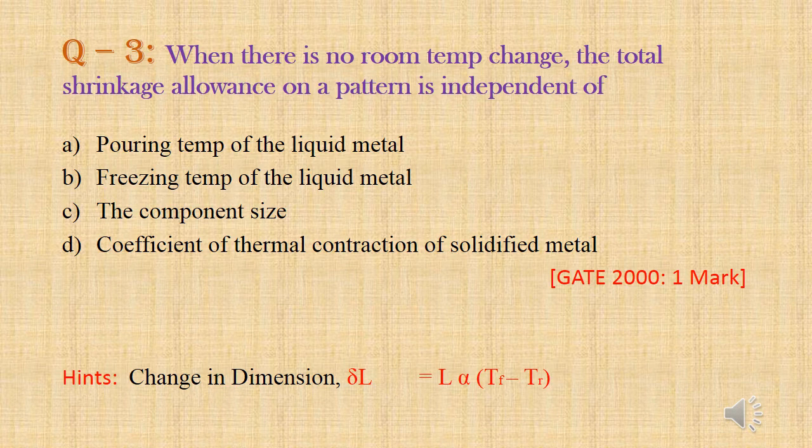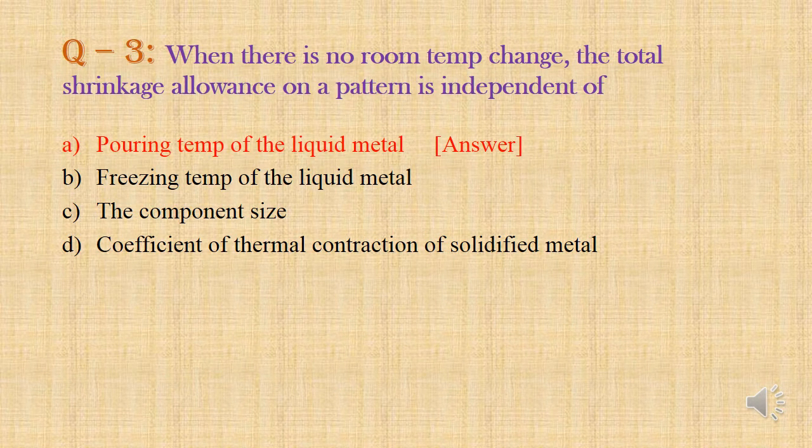Question 3: When there is no room temperature change, the total shrinkage allowance on a pattern is independent of — Option A: pouring temperature of the liquid metal. Option B: freezing temperature. Option C: component size. Option D: coefficient of thermal contraction. Using the formula ΔL = L × α × (Tf − Tr), shrinkage allowance depends on L (component size), α (coefficient of thermal contraction), and Tf (freezing temperature), but not on pouring temperature. Answer: Option A.